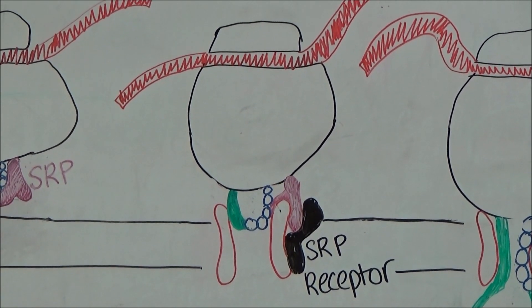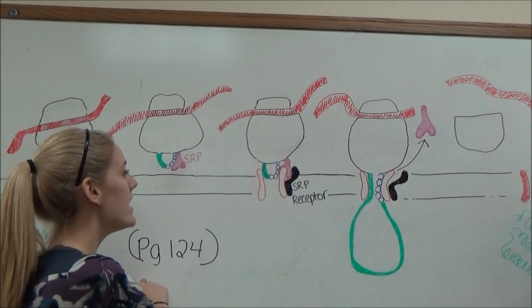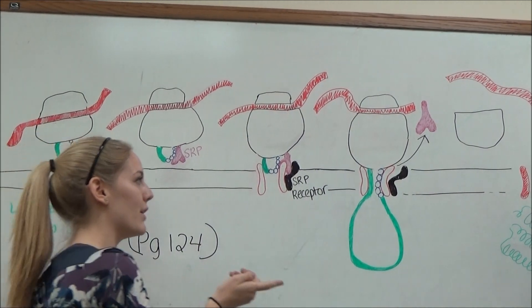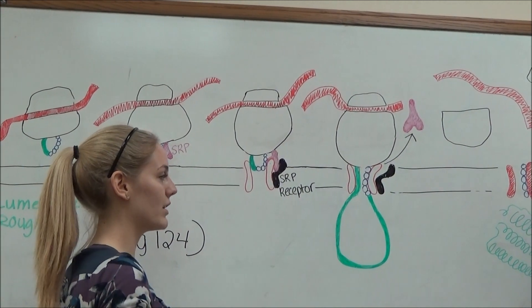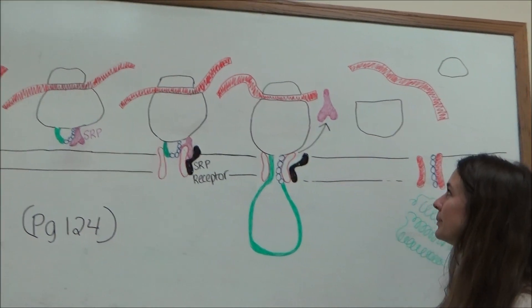Now this, what used to be a free ribosome, is now one of the attached ribosomes to the rough ER. Now further synthesis of the polypeptide can continue to occur, so the protein continues to be made here.